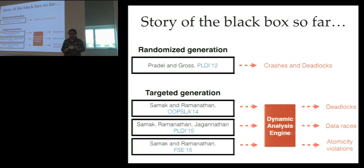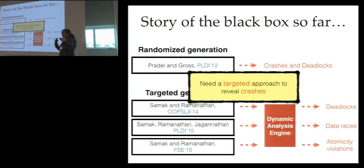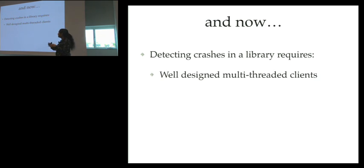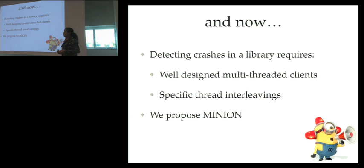In this, we missed the key aspect. What we, to this day, do not have is a targeted technique that will generate clients to reveal crashes that are hidden in the library. This is the problem that we are going to look at in this work. What we want is to be able to detect crashes that are hidden in the library. If we want to do this, we want a technique that will design a good multi-threaded client which will reveal this and also come up with a scheduling that has to be followed for the assertion to fail. To do this, we propose Minion.